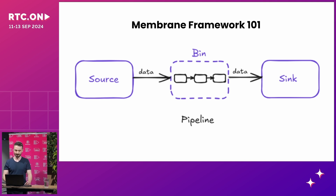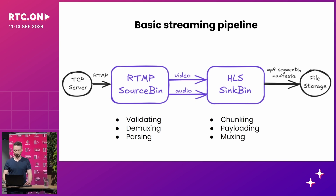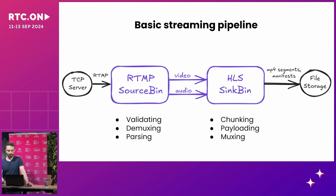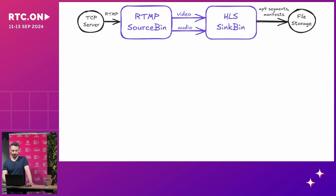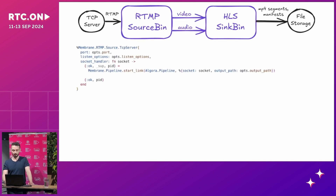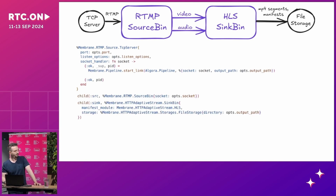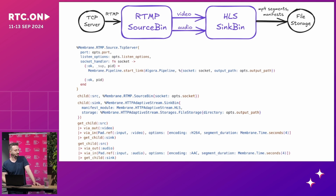You can nest bins, though I'm not sure that's always a great idea. In practice, this is what a basic streaming pipeline looks like: we have an RTMP source bin that receives RTMP packets from a TCP server, demuxes that into audio and video, and hands it off to the sink bin. The sink bin chunks these streams into segments and writes them to disk on a server. In code, you have a TCP server, source bin, and sink bin with connections for each channel — video and audio.